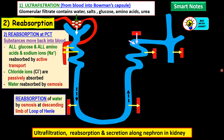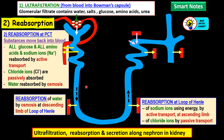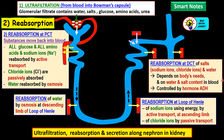For reabsorption in the loop of Henle — at the descending limb, there is reabsorption of water by osmosis. Then the fluid flows upwards through the ascending limb of the loop of Henle. In the ascending limb, sodium ions are reabsorbed by active transport using energy back into the blood, and chloride ions are also reabsorbed — but chloride ions are reabsorbed by passive transport without the use of energy, whereas sodium ions are absorbed by active transport.